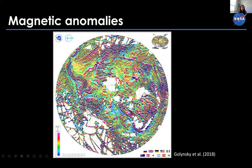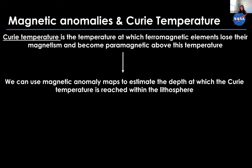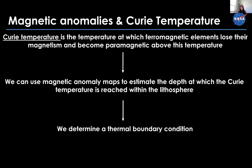We use magnetic anomalies to understand geological provinces. In Antarctica, we can follow the Antarctic Peninsula and the coast, and we can distinguish spreading magnetic anomalies in the WDLC region. There are parts logistically very complicated on Earth with gaps in data. Another way to use magnetic anomalies is to estimate Curie depth. The Curie temperature is the temperature at which ferromagnetic elements lose their magnetism and become paramagnetic. Using magnetic anomaly maps, we can estimate the depth at which we reach this temperature within the lithosphere, and then determine a thermal boundary condition to estimate geothermal heat.